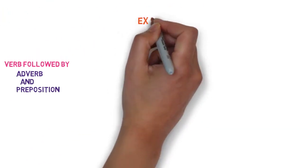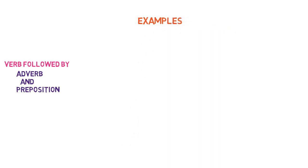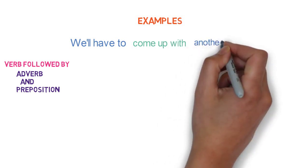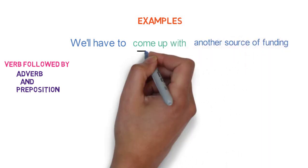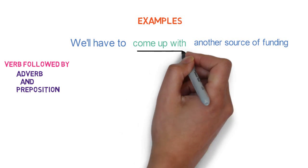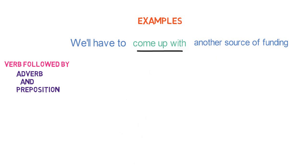Let's see examples of verb followed by adverb and preposition. 'We will have to come up with another source of funding.' Here, 'come up with' is a phrasal verb having the combination of verb, adverb, and preposition.